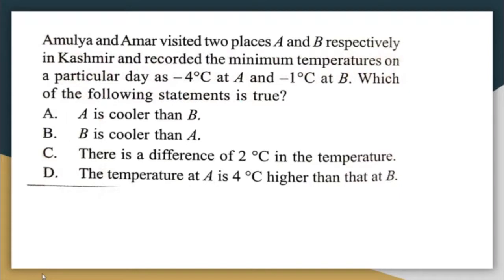Amulya and Ammar visited two places A and B respectively in Kashmir and recorded the minimum temperatures on a particular day as minus four degrees Celsius at A and minus one degree Celsius at B. Which of the following statements is true? A is cooler than B.